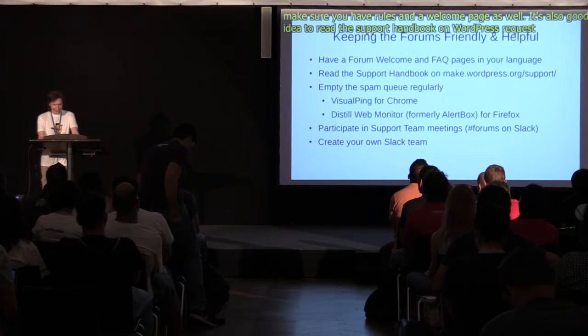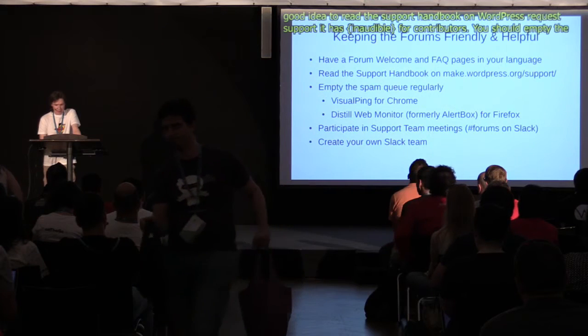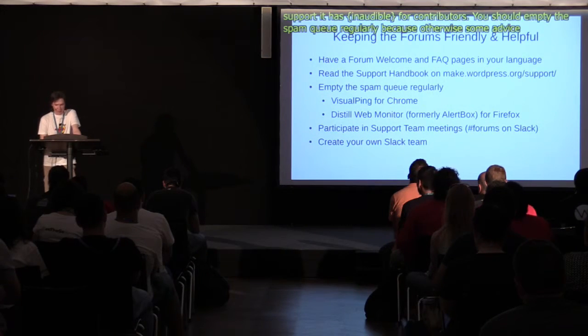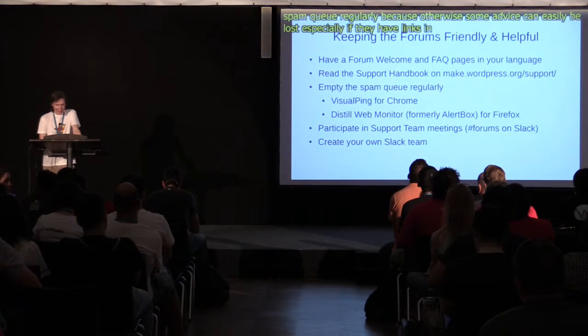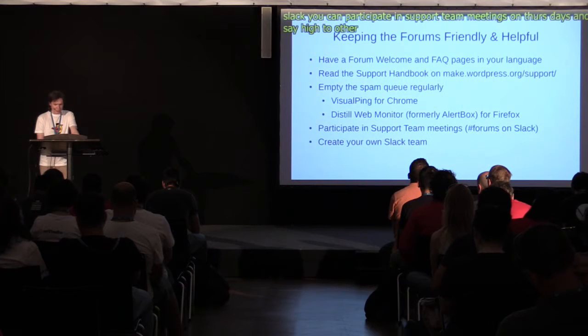It's also a good idea to read the support handbook available on make.wordpress.org — it has general expectations and advice for support contributors. You should empty the spam queue regularly, because otherwise some replies can easily be lost, especially if they have links in them. There are browser extensions you can set up for that, like VisualPing for Chrome or Distilled Web Monitor for Firefox. If you're on WordPress Slack, you can participate in support team meetings on Thursdays and say hi to other members of the international support team. You might also want to create your own Slack team to discuss things specific to your locale and language.